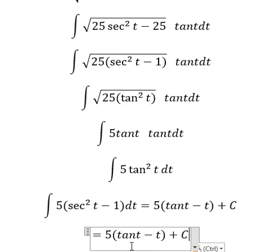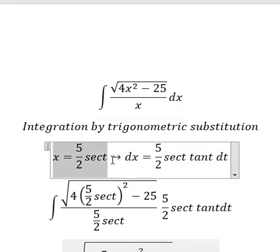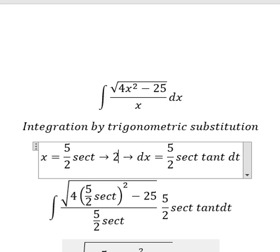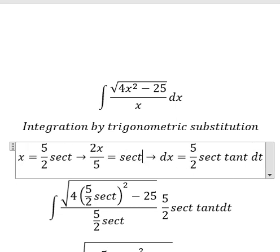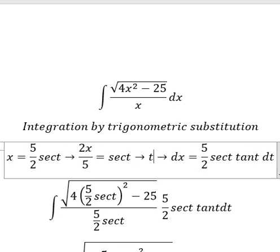For t, that is this one, so we need to divide both sides by 5 over 2, and now we can find the value of t.